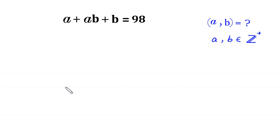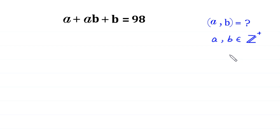Welcome to how to solve this very nice Diophantine equation: A plus AB plus B is equal to 98. We need to find all possible values of A and B, where A and B are positive integers, meaning A is greater than 0 and B is greater than 0.